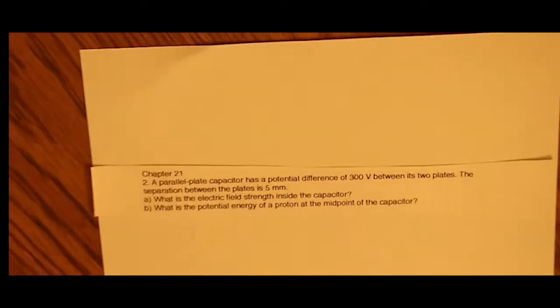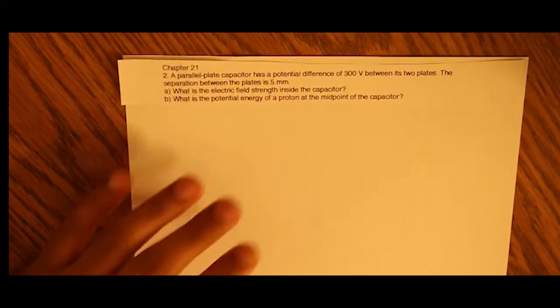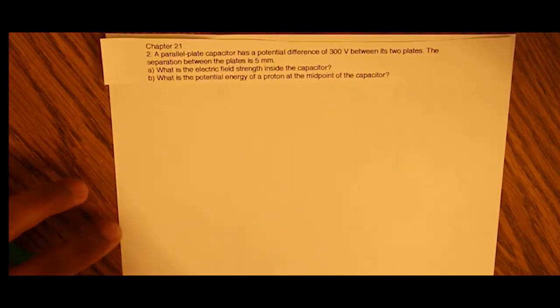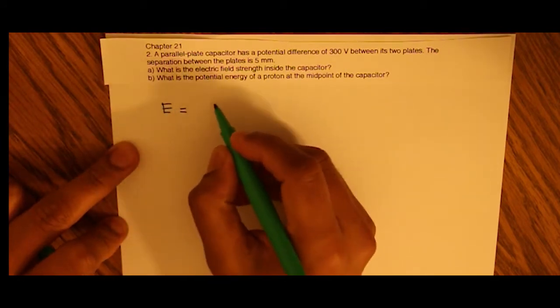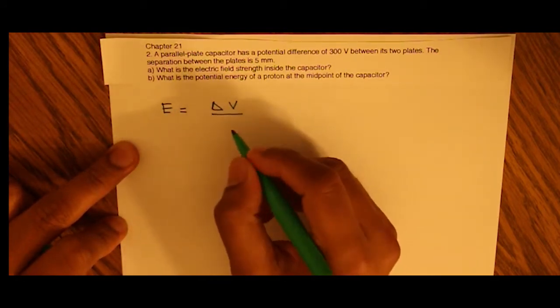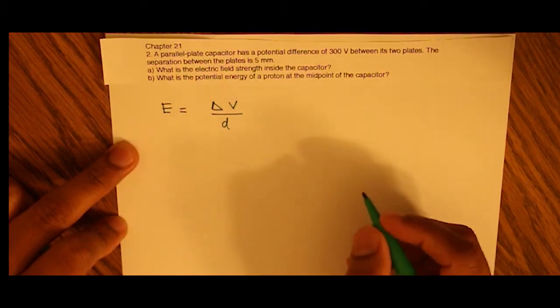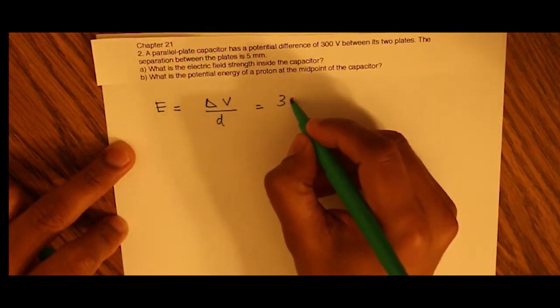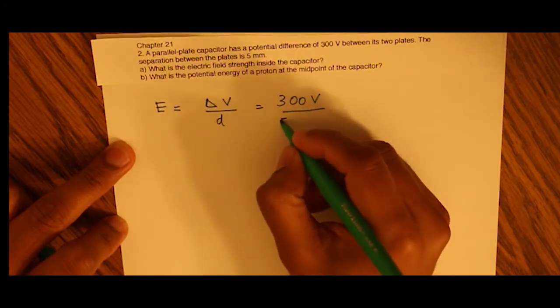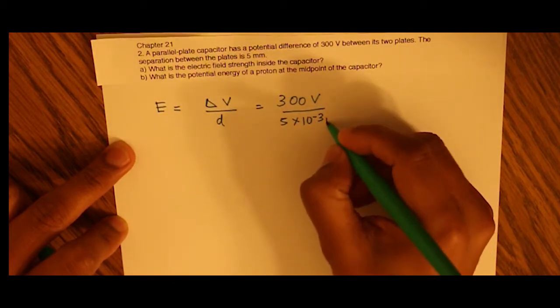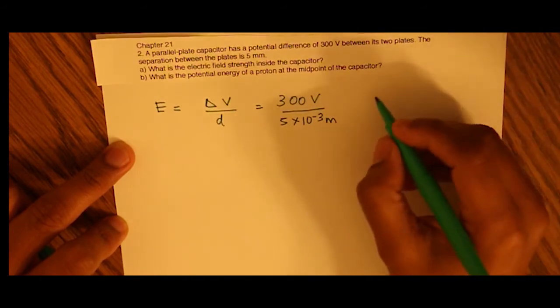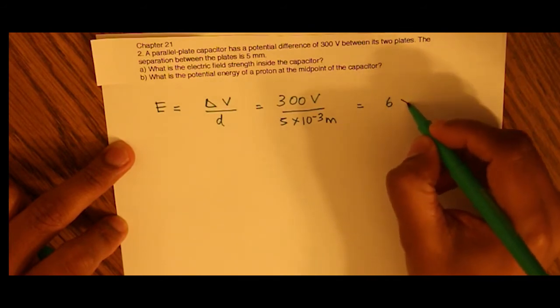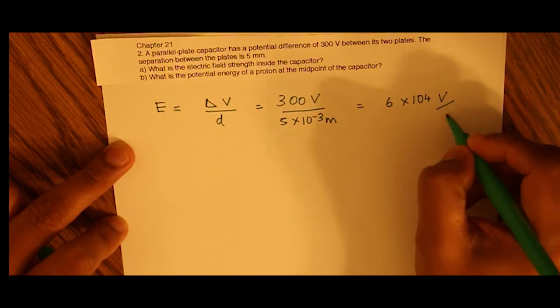Let's first tackle the electric field strength. The formula is: electric field strength of a capacitor equals the difference in voltage divided by the distance between the two plates. We're already given those values. The voltage difference across the two plates is 300 volts, and the distance is 5 times 10 to the negative 3 meters, or 5 millimeters. This gives us an electric field strength of 6 times 10 to the 4 volts per meter.